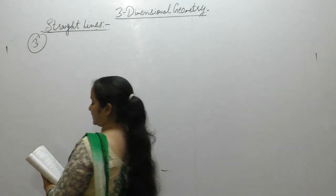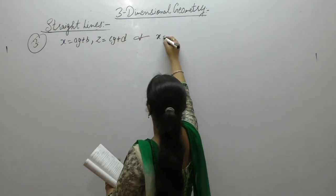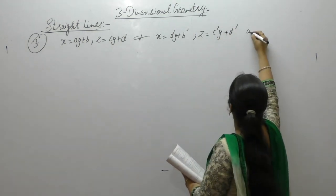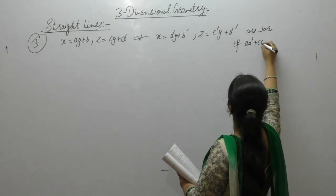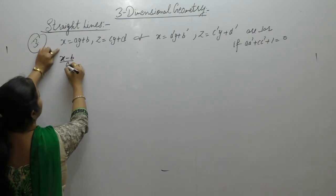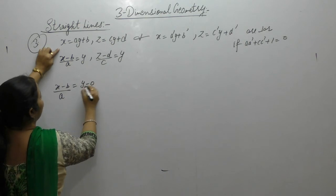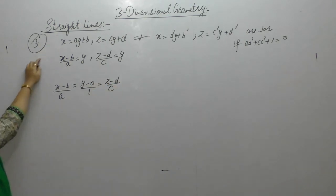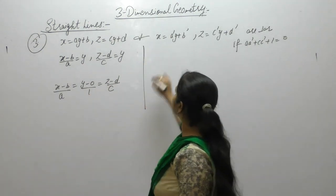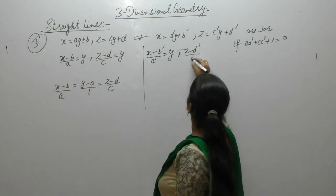Next question: prove that the lines x = ay + b, z = cy + d and x = a'y + b', z = c'y + d' are perpendicular if aa' + cc' + 1 = 0. Rewriting the first line in standard form: (x−b)/a = y/1 = (z−d)/c.